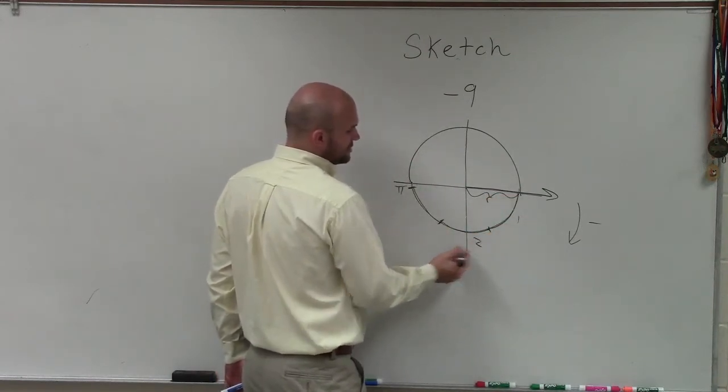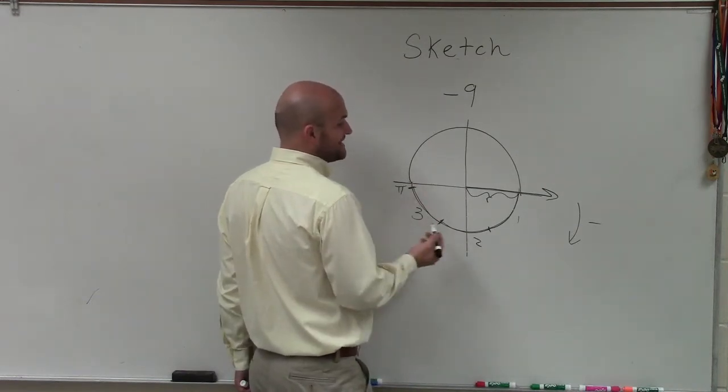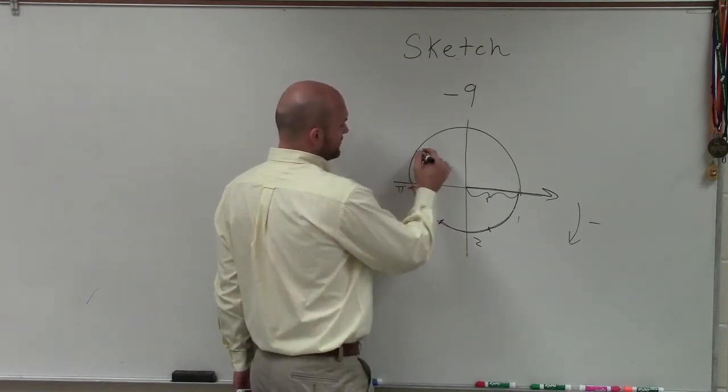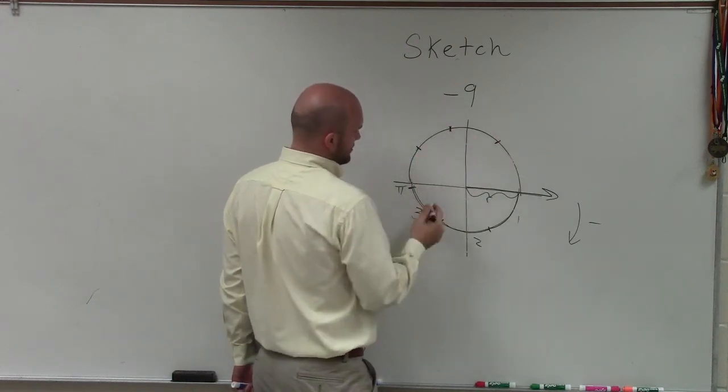So that's 1 radian. That's 2. That's 3. Now I'm going to try to do my best and estimate this. But we need to get to 9. So 1, 2, 3, 4, 5. That's already wrong.